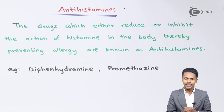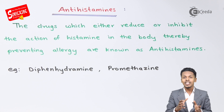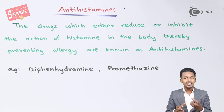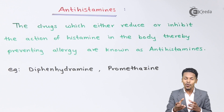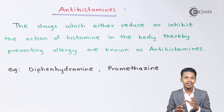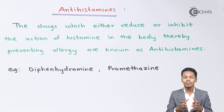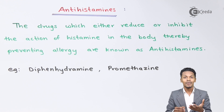Histamine is present in our body and whenever it interacts with the binding receptor it produces allergy. Antihistamines and histamine are in competition to bind with the receptor. When we consume an antihistamine, it associates with the binding receptor, and thereby histamine cannot attach to that receptor, which prevents the allergy.